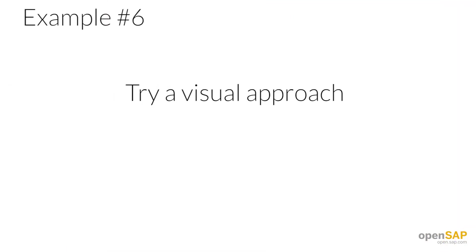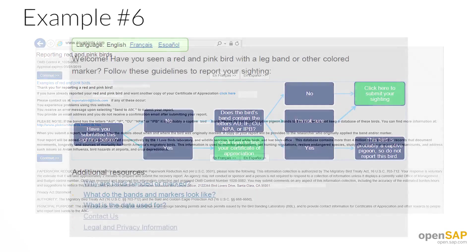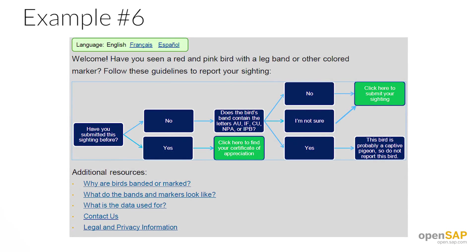Example six. Here's a website, but it's an unintuitive giant block of text, and most of the content explains error messages that might not even show up. In this case, the entire method of presenting the information has been changed from text to a flowchart, which makes it much easier to use. The purpose of the content is stated clearly at the beginning, and helpful links to more details are provided at the bottom.